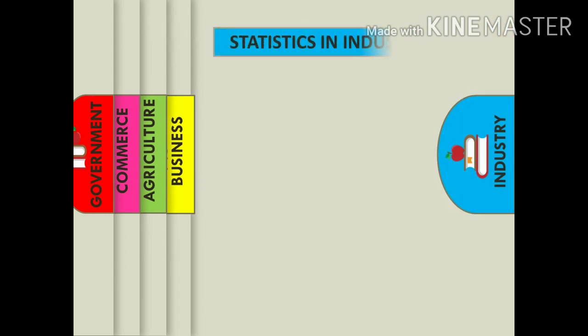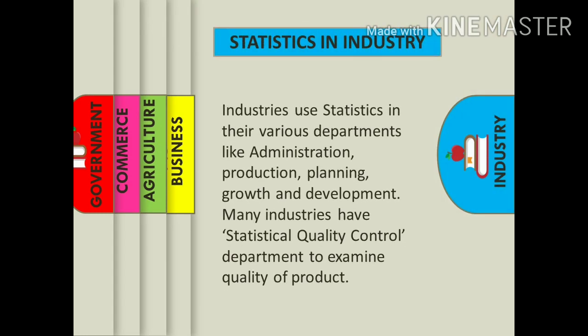First is statistics in industry. Various departments in industry like administration, production, and production planning use statistical techniques. Many production industries which manufacture products have an independent statistical quality control department which examines the quality of the product. They use tools like control charts to maintain product quality.